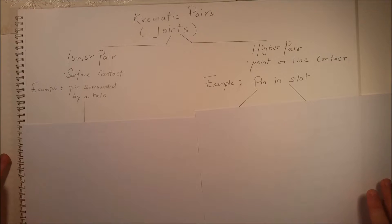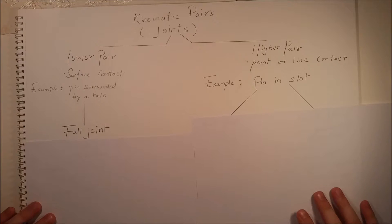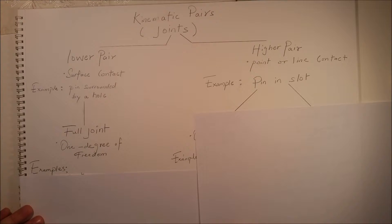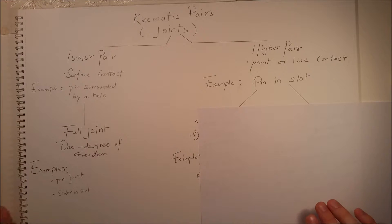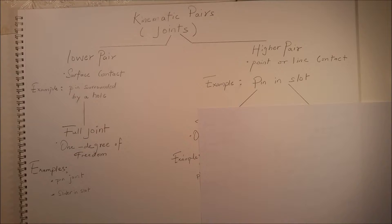The first example we have is a pin in a slot. A pin in slot is a higher pair joint. For the lower pair, we have a full joint, which describes one degree of freedom — it allows only one movement. Examples of a lower pair full joint include a pin joint, which allows rotation, and a slider in a slot, which allows horizontal or vertical movement along the x-axis or y-axis.